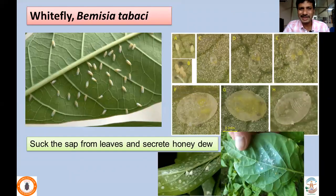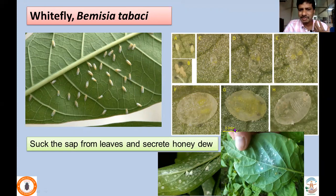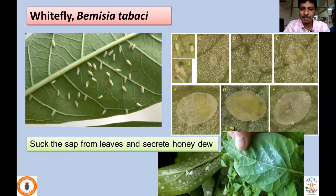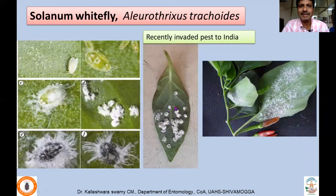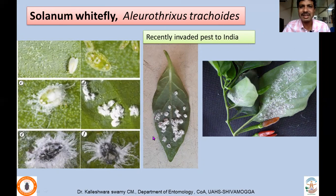Whitefly, Bemisia tabasi: both nymphs and adults continuously suck sap and secrete honeydew causing sooty mold. Direct damage is comparatively less, but they transmit a very important group of viral diseases called geminiviruses. Recently, another whitefly species, Aleurotrixus trichidus (solanaceous whitefly), was reported from India, with increasing damage expected.